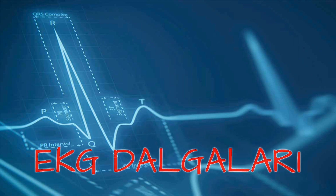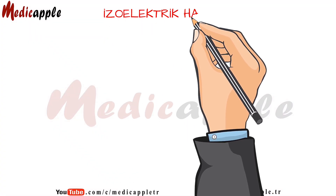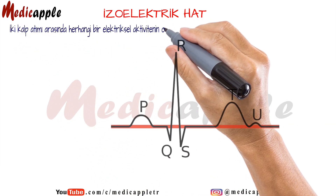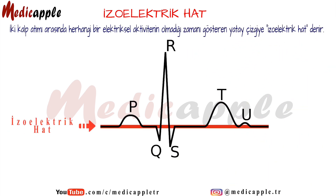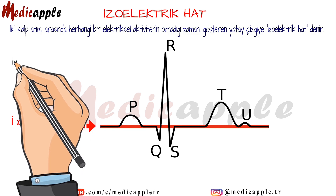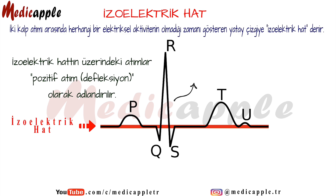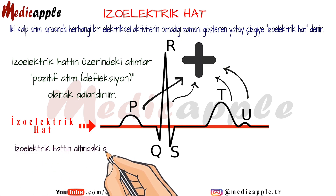ECG waves. Isoelectric line. The horizontal line between two heartbeats that shows the time when there is no electrical activity is called the isoelectric line. Pulses above the isoelectric line are called positive pulses, and pulses below the isoelectric line are called negative pulses.